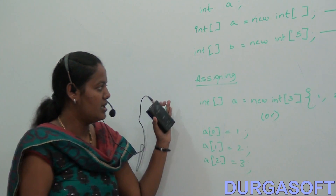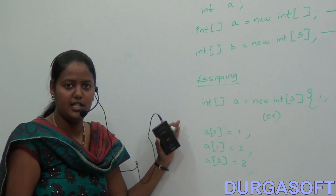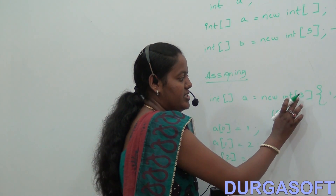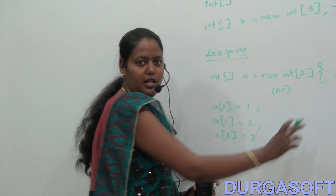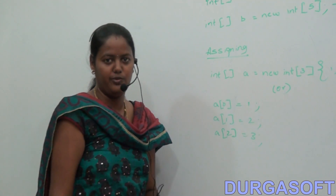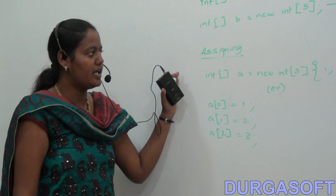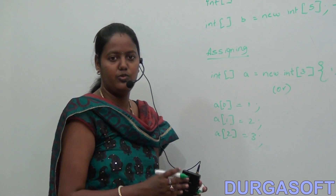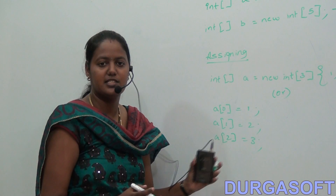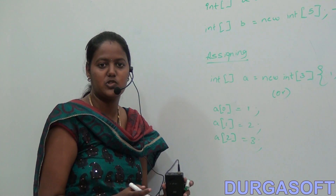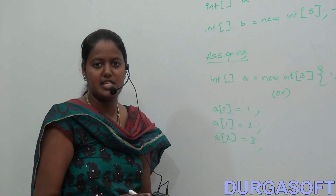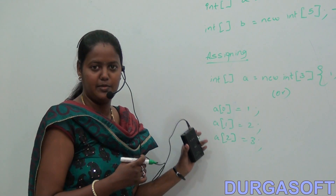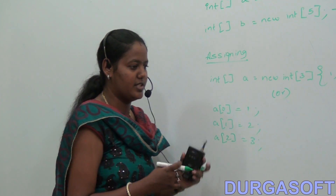For a dynamic array, there is no need to mention the length — you can directly pass the values. So those are the fixed length and dynamic assignment approaches for single dimensional arrays. Now let us see how to initialize and assign values for multidimensional and jagged arrays.